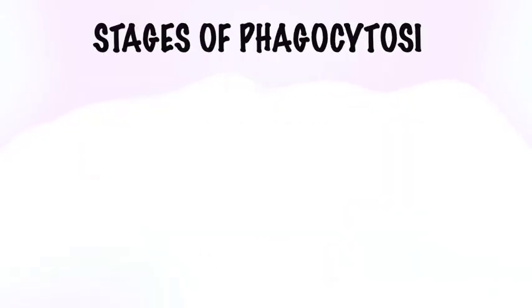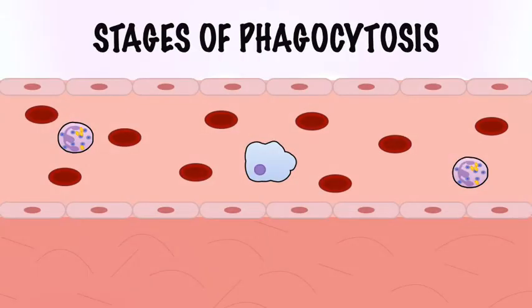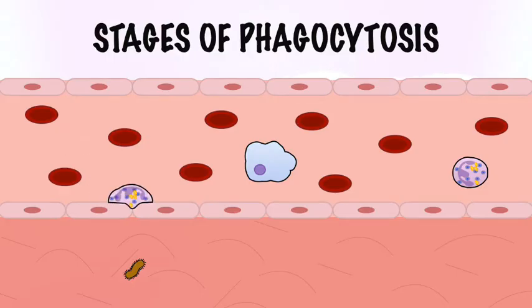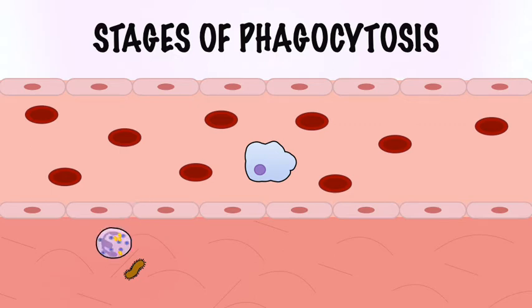Phagocytosis consists of several stages. The first is chemotaxis of phagocytic cells to the place of injury — a process by which phagocytes leave the bloodstream and migrate to the affected tissues.